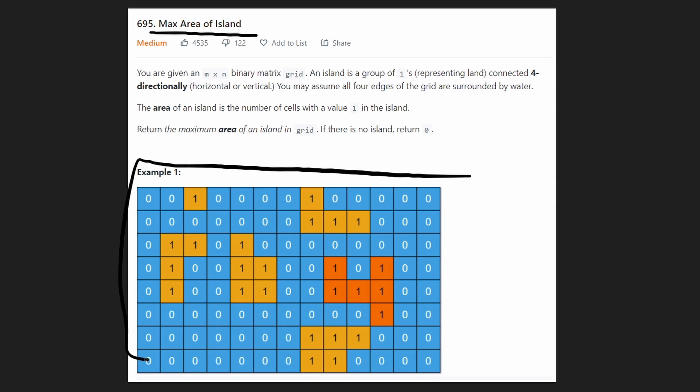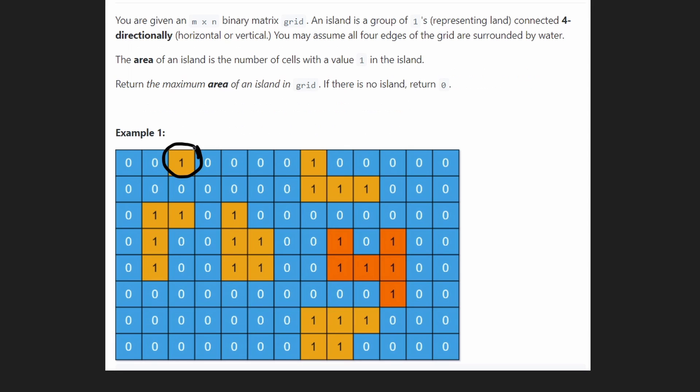We're given a 2D grid where zeros represent water, as you can see they're blue, and ones represent land. An island is going to be consecutive one values that are connected either horizontally, like from the left and right side, or vertically, so up and down. Two cells that are connected diagonally don't really count. So if I add one here, this and this are not connected. They're not an island. They're separately an island. This is a separate island. This is a separate island. This is a separate island. And this is a separate island.